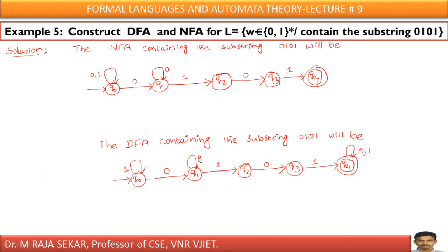Now construct both DFA and NFA for: L = { w ∈ {0,1}* | w contains substring 010 }. This is a straightforward problem — you can go through it.